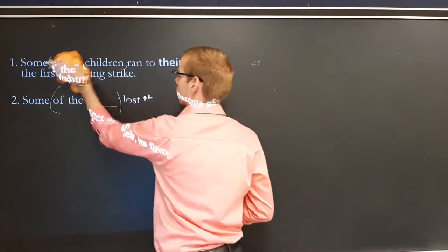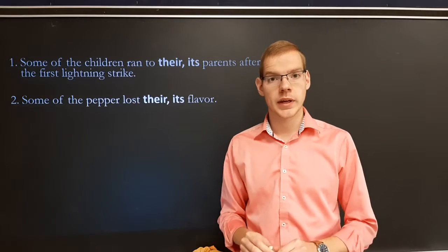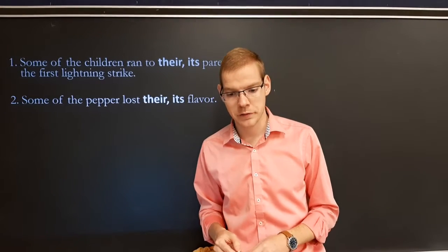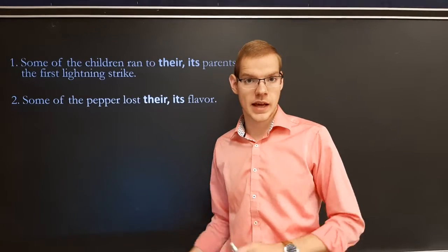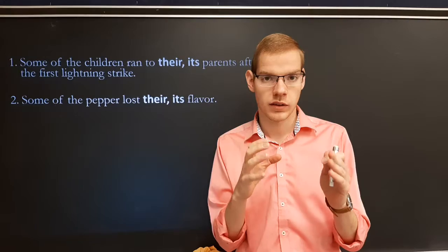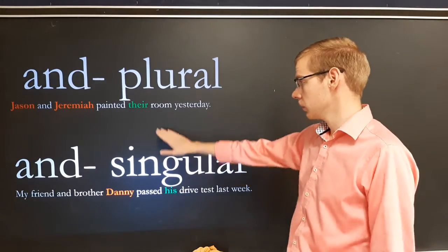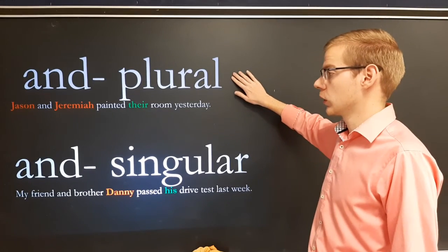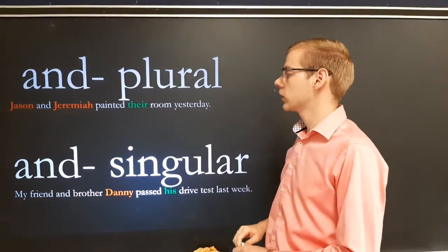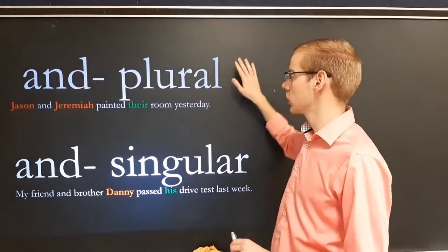Go ahead and do those. Now, going on to the next part: anytime we have the word 'and' in between two words — for example, 'Lori and Denise painted their room last Saturday' — anytime we have that 'and,' it will usually be a plural pronoun. The plural applies when talking about two people: 'Jason and Jeremiah painted their room yesterday.' That's two people, therefore we need plural.